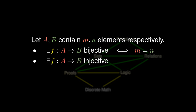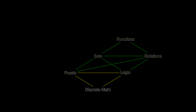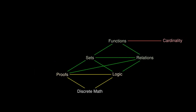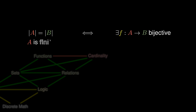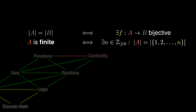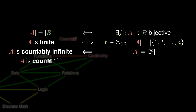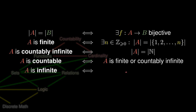There is an injection from A to B precisely when M is not more than N, and there is a surjection from A to B precisely when M is not less than N. These ideas hold for finite sets and can be somewhat generalized to infinite sets. We say that A and B have the same cardinality precisely when we can find a bijection from A to B. We say that A is finite if A has the same cardinality as some finite set, and A is countably infinite if it has the same cardinality as the natural numbers. A is countable precisely when it is either finite or countably infinite, and uncountable precisely when it is not countable.